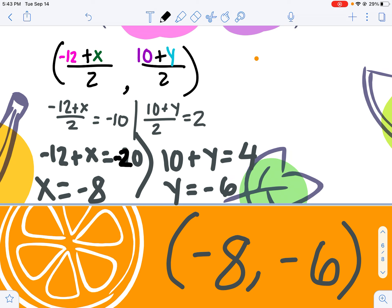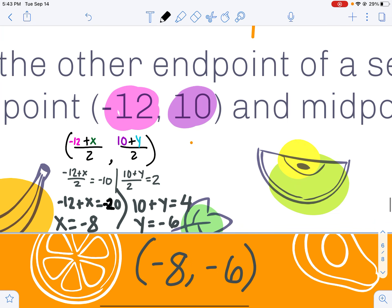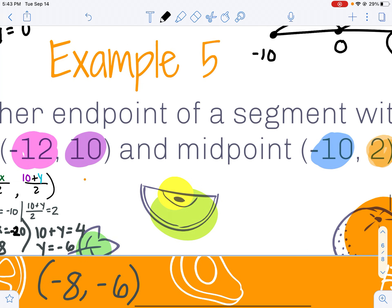Repeat that process with my y value. 10 plus y divided by 2. Multiply by 2 on both sides to get 10 plus y is 4, and then subtract. Or I can think of it in terms of a number line.